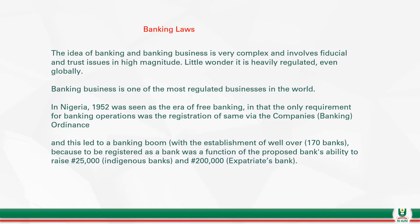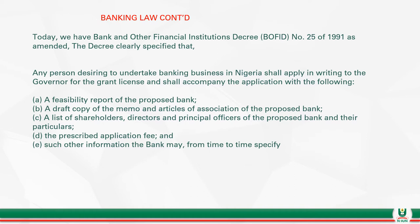The situation changed in 1952 with the establishment of the first Banking Ordinance, which placed restrictions on the establishment of banks. Before 1952, we had over 170 banks because it was free entry for all. Today, we have the Banks and Other Financial Institutions Decree (BOFID) No. 25 of 1991, as amended, with regulations that checkmate entrance into banking establishment.